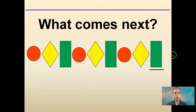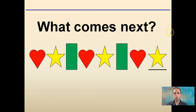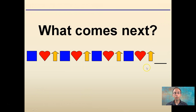Let's do this again. For this pattern, what comes next? If you said yellow star, you'd be correct. And lastly, what comes next here? If you said blue square, you would be correct.